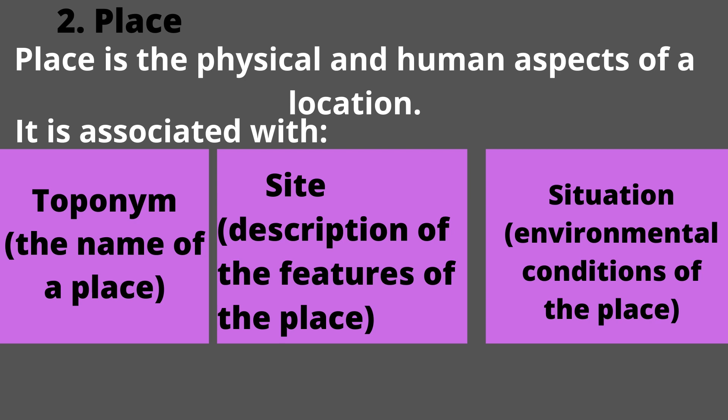Place refers to the physical and human aspects of a location. It is a way of seeing, knowing, and understanding the world. This theme of geography is associated with toponym, site, and situation.